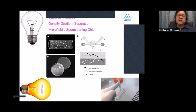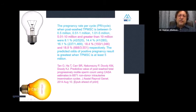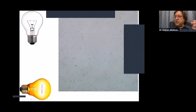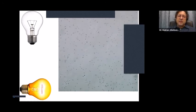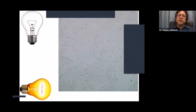A 2019 paper compared density gradient separation — the traditional method used for 30–40 years — to microfluidic sperm sorting, and found a much higher pregnancy rate with microfluidics. When the total progressive motile sperm count is at least 5 million post-processing, positive pregnancy results are more frequent. This shows how a clean, well-processed sample with nicely motile sperms looks after processing — and such a sample is placed in the uterus for IUI.